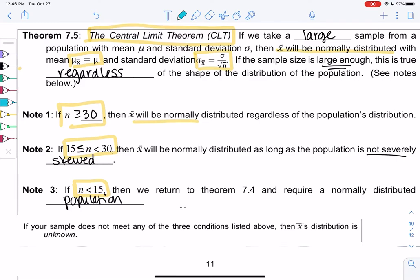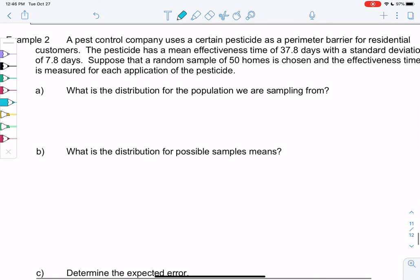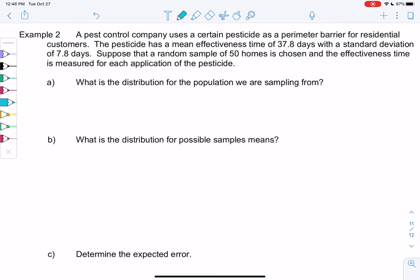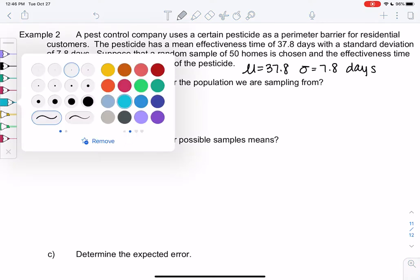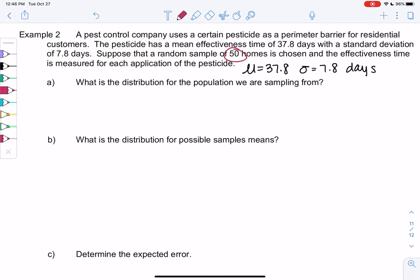Let's do Example 2. A pest company uses a certain pesticide as a perimeter barrier for residential customers. The pesticide has a mean effectiveness of 37.8 days, so μ is 37.8, and a standard deviation σ of 7.8, both in days. Let's suppose we take random samples of size 50 and we measure the effectiveness time in each of these applications.